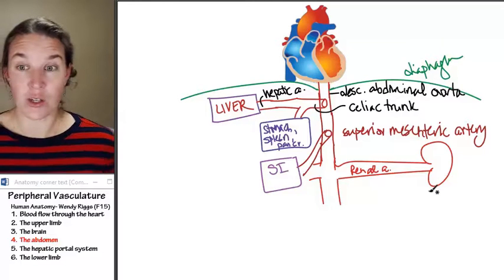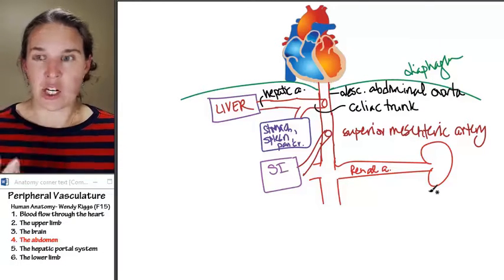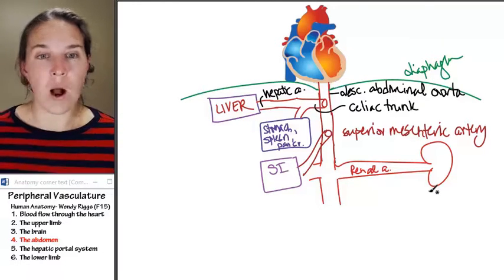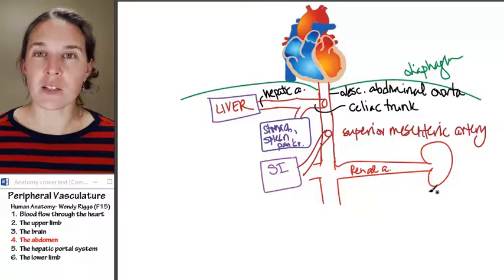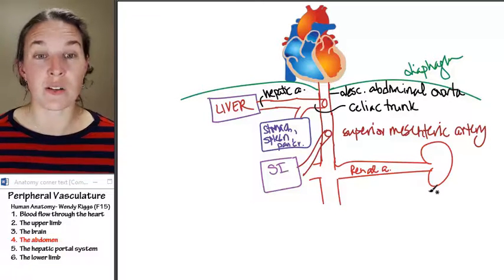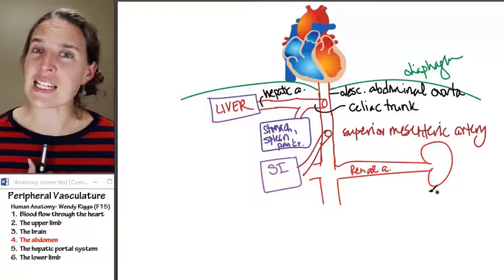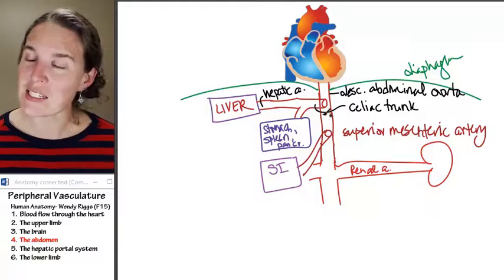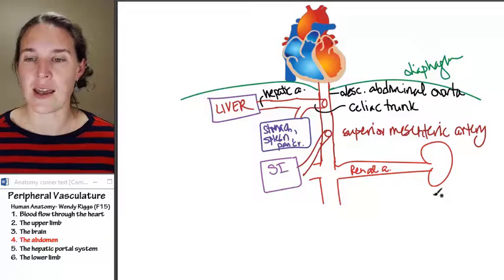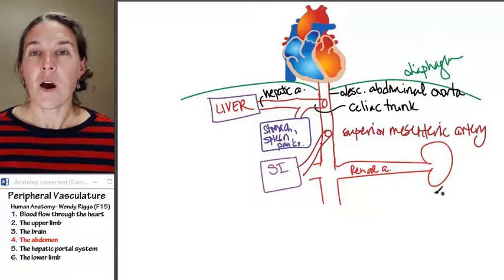So the renal arteries feed the kidneys. Now, they're huge. They really are that gigantic. They're crazy huge. Why? Because you are doing a lot of blood filtering using those giant renal arteries in your fantastic kidneys, which are the topic of our next little section in anatomy.